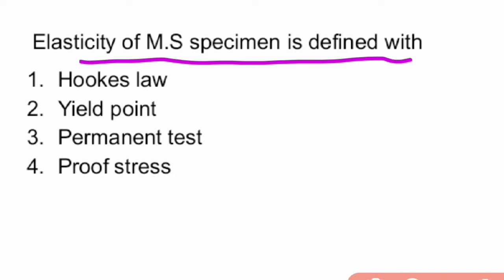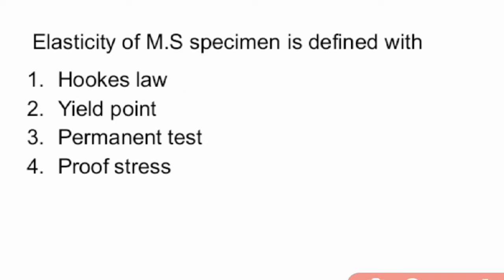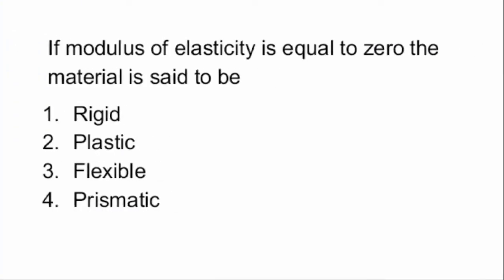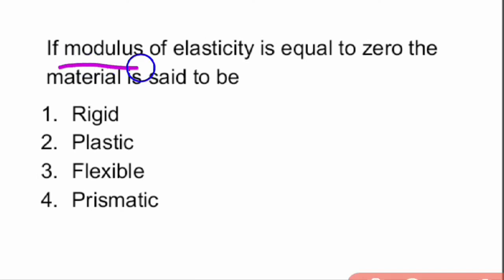The elasticity of a mild steel specimen is defined by Hooke's Law. According to Hooke's Law, as we know, stress is directly proportional to strain. One of the salient points is the elastic limit. So elasticity of a mild steel specimen is defined with Hooke's Law.